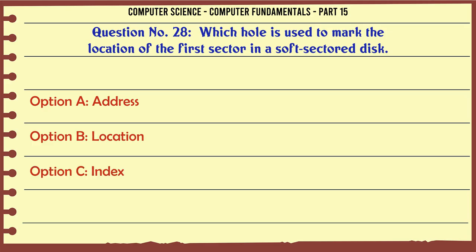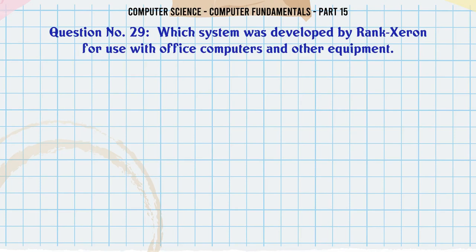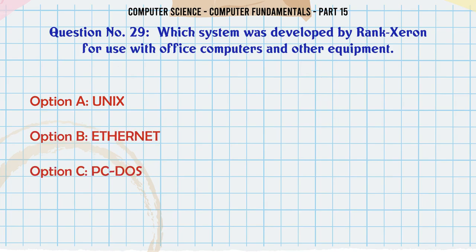Which hole is used to mark the location of the first sector in a soft-sectored disk? A. Address B. Location C. Index D. Label. The correct answer is Index.